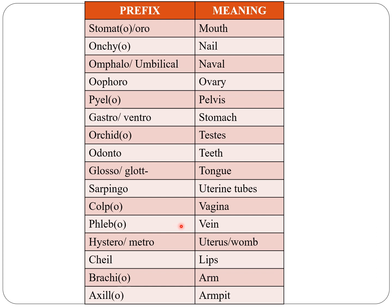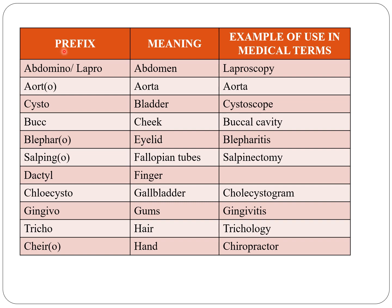Phlebo indicates vein. Hystero or metro indicates uterus or womb. Cheil indicates lips. Brachio indicates arm and axillo indicates armpit. Abdomino or laparo indicates abdomen, as in laparoscopy. Aorto indicates aorta. Cysto indicates bladder, as in cystoscope.